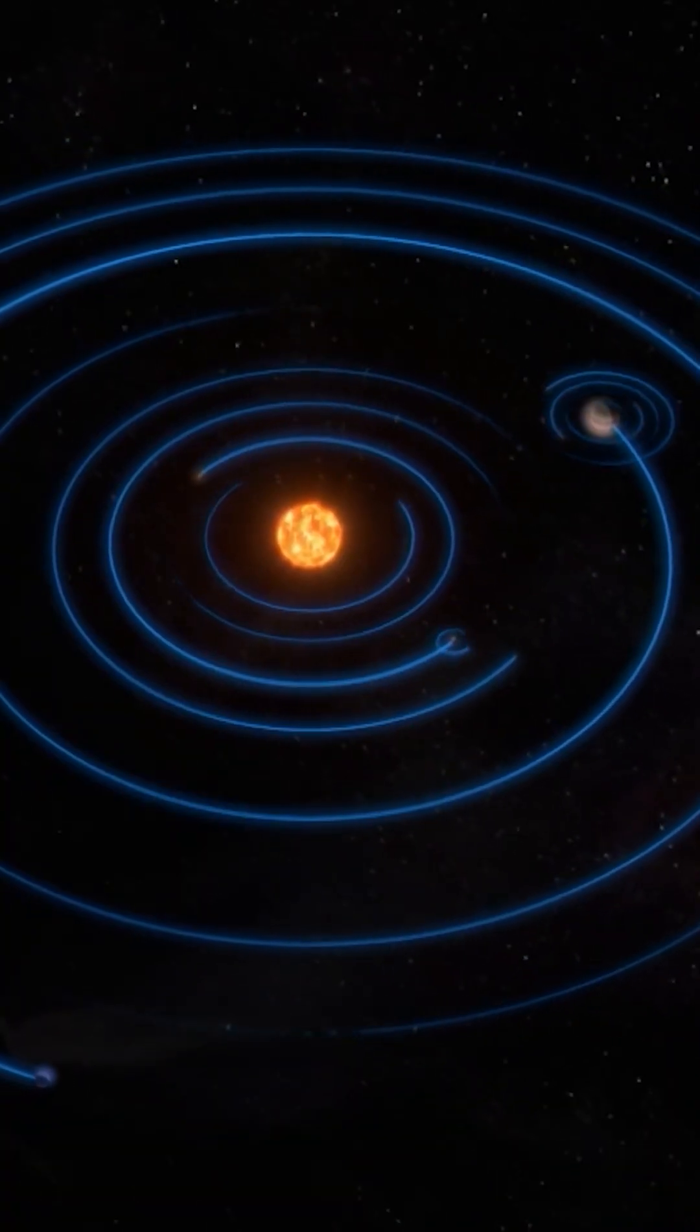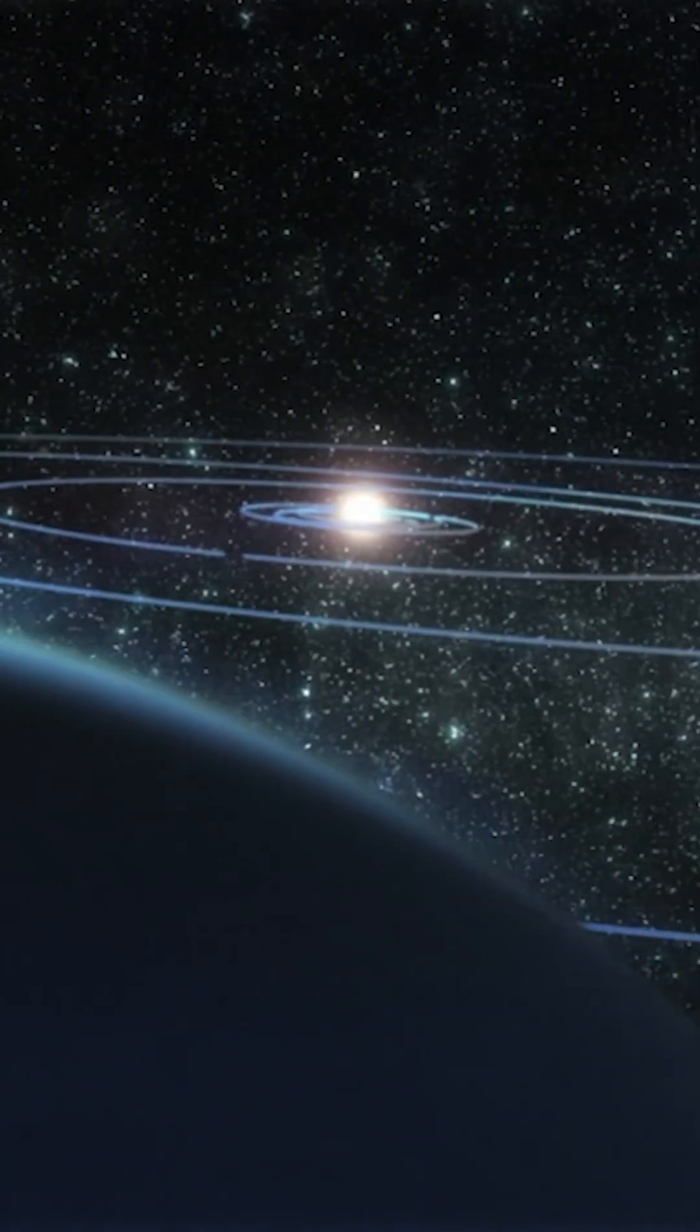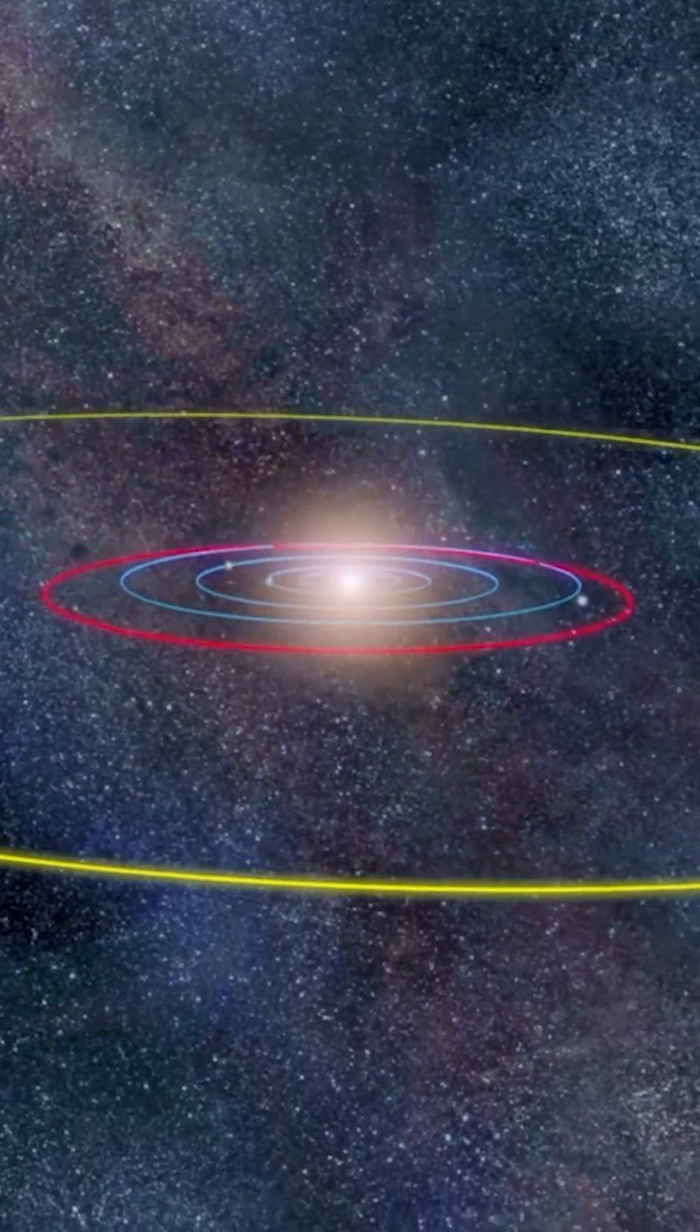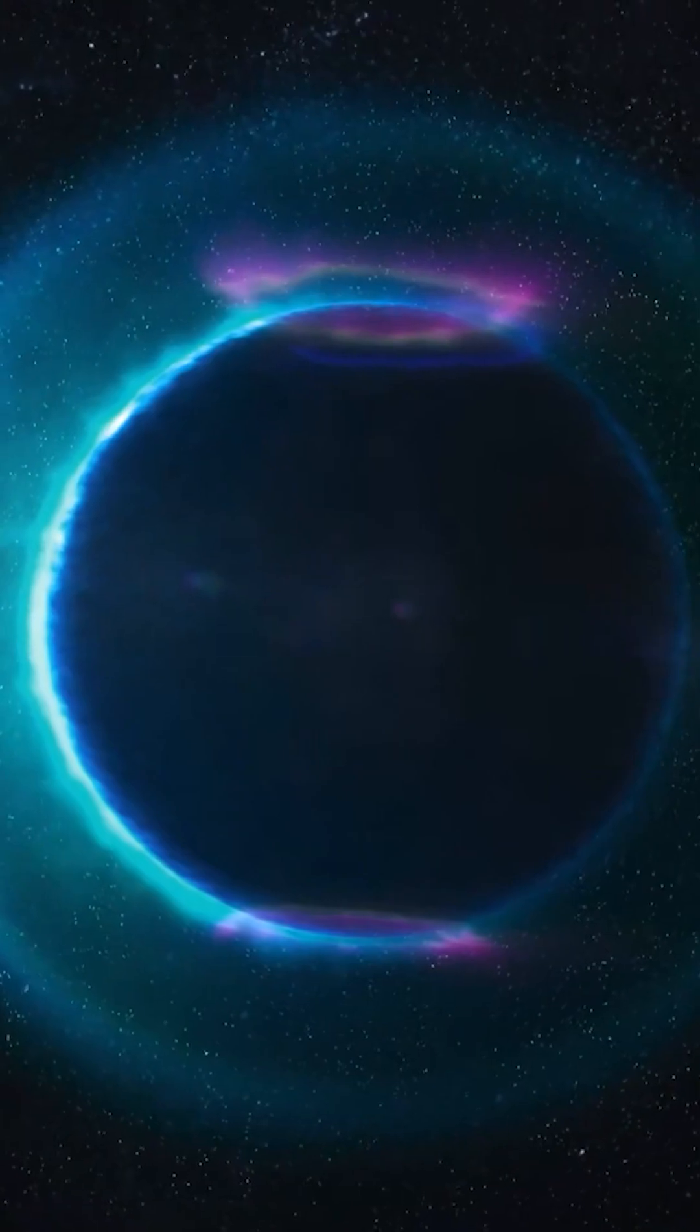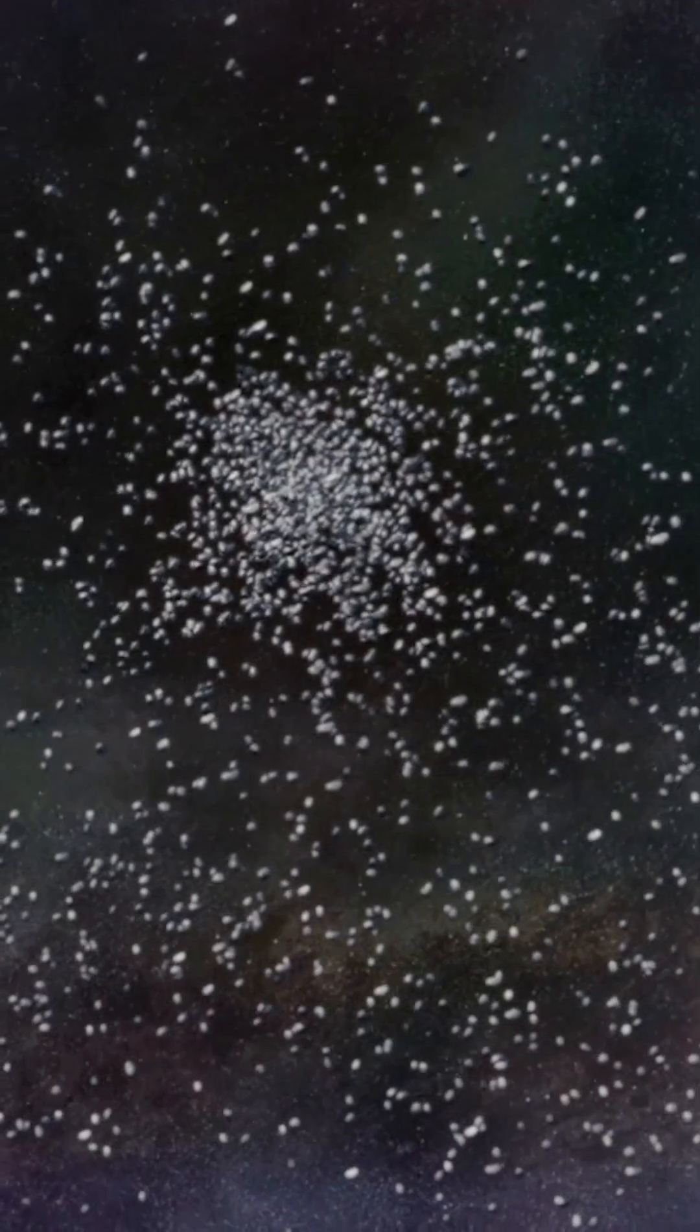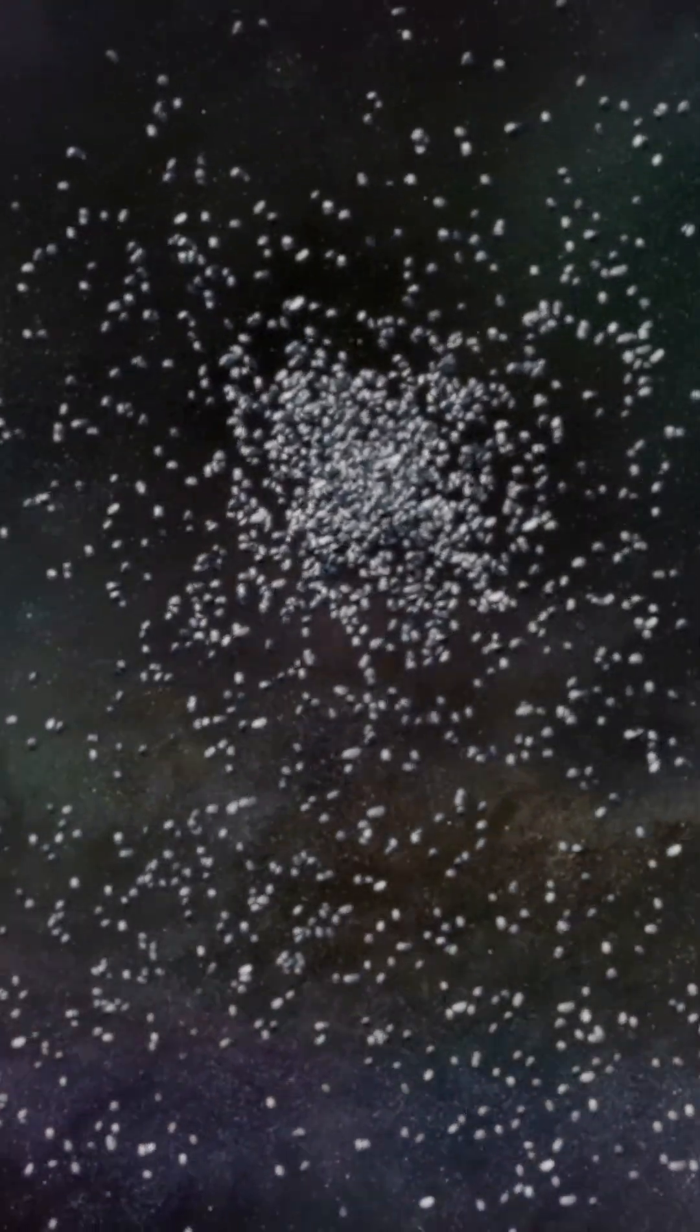In fact, we're not even completely certain Neptune really is the last planet. Some scientists believe there could be a ninth planet out there, possibly 5 to 10 times more massive than Earth. The strongest hint of its existence comes from a group of distant icy objects beyond Neptune that all seem to follow strangely clustered orbits.